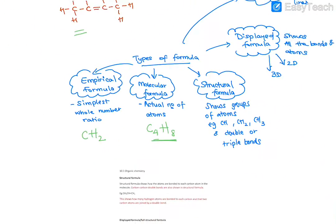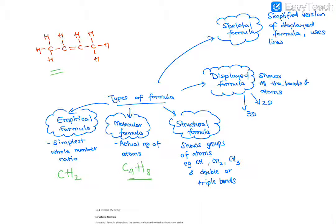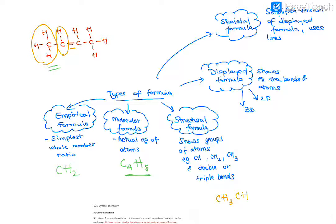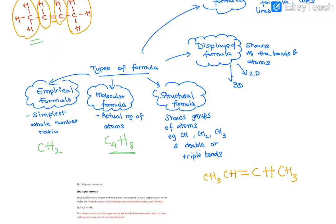So let's see for this example. If you have to write the structural formula, you have one group here — this is CH3, and this is linked to another CH3. Then you have a double bond: C double bond C, and this C is bonded to an H, and this is bonded to a CH3. So this is the structural formula — it shows groups of atoms bonded to each other, and shows double bonds or triple bonds. Single bonds are not shown because it's understood that there's going to be a single bond.